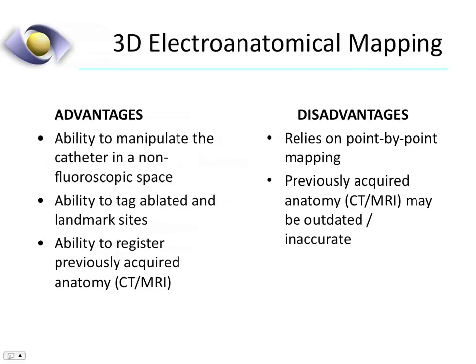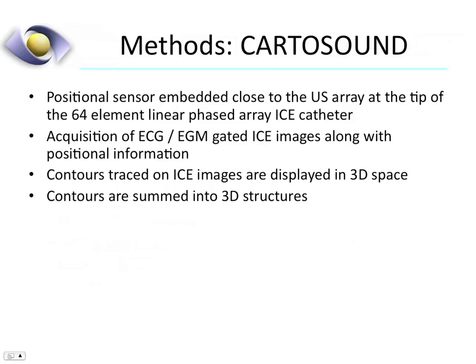Advantages of 3D electroanatomical mapping include the ability to manipulate the catheter in non-fluoroscopic space, the ability to tag ablated and landmark sites, and the ability to register pre-acquired CT and MRI images. Unfortunately, most of the time this type of mapping relies on point-by-point acquisition, and previously acquired anatomy may be outdated and inaccurate at the time of the procedure.